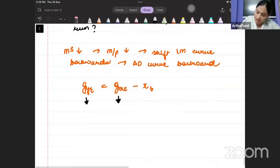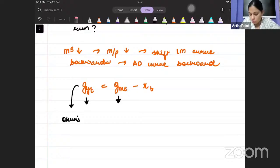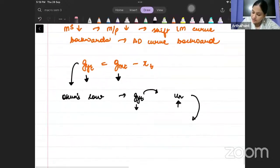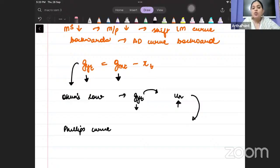When output growth falls, through the Okun's law, what do we know? We know that when there is going to be decrease in the output growth, it is going to cause changes in the unemployment. Unemployment will start to increase. And if unemployment rate increases, through Phillips curve, what do I know? Through Phillips curve, I know that there is going to be decrease in the inflation.